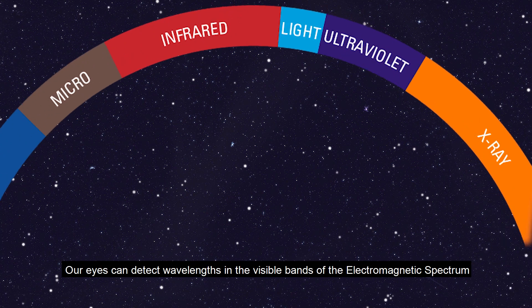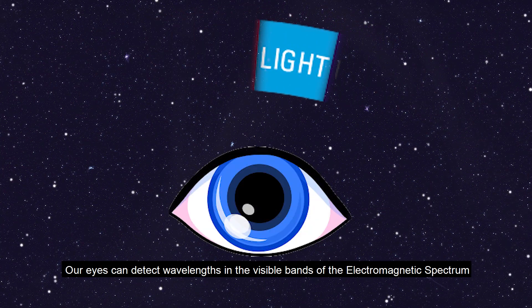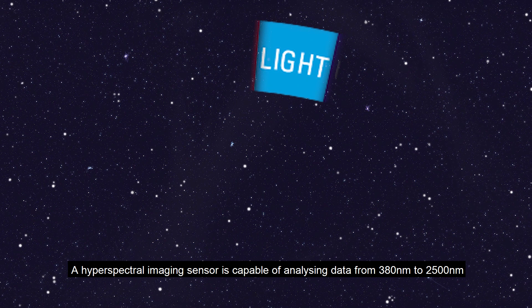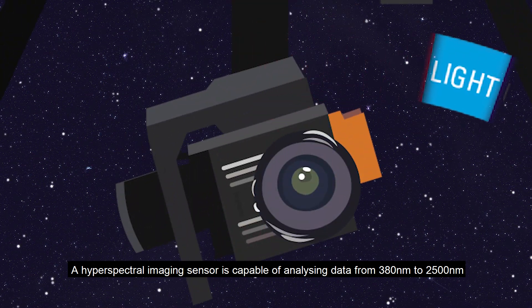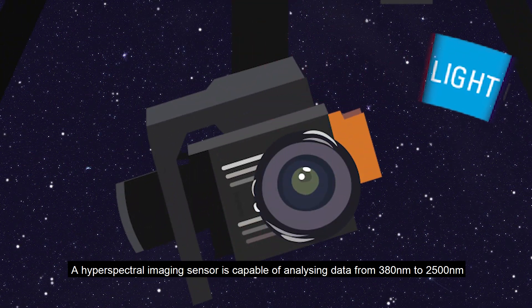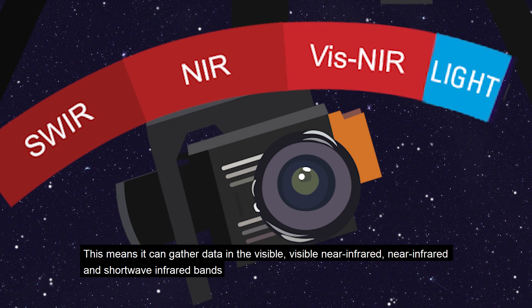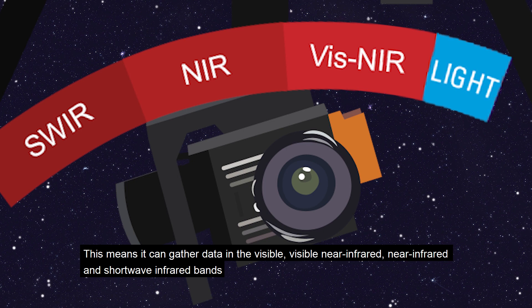Our eyes can detect wavelengths in the visible bands of the electromagnetic spectrum. A hyperspectral imaging sensor is capable of analysing data from 380nm to 2500nm. This means it can gather data in the visible, visible near-infrared, near-infrared and short-wave infrared bands.